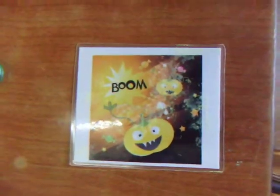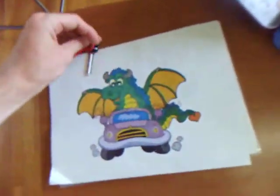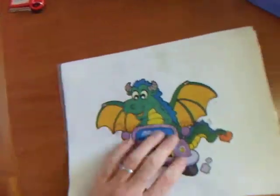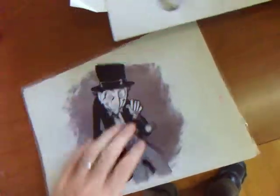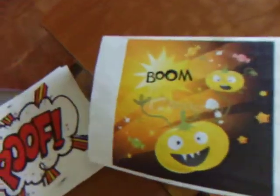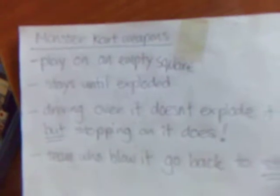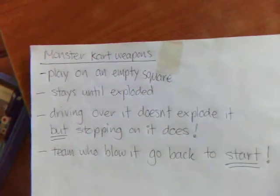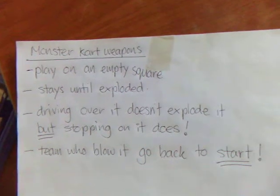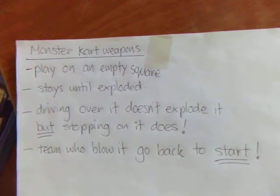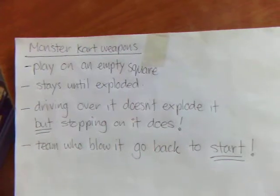That team then gets the weapon. So in this case, all my weapons are Halloween themed. So we've got a pumpkin bomb here. I don't explain the weapons at the beginning of the game. I explain the weapons as the students pick them up. So this one, you can play on an empty space and stays there until exploded. Driving over it doesn't explode it, but stopping on it does. The team who blows it up goes back to the start.